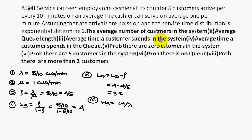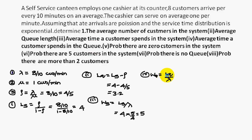Ws equals Ls by lambda, which is 4 divided by (8/10), giving 4 times (5/4) equals 5 minutes. The next question is the average time a customer spends in the queue only, which is Wq equals Lq by lambda — that is 3.2 divided by (8/10), which equals (16/5) times (5/4), giving Wq equal to 4.